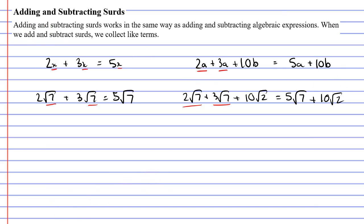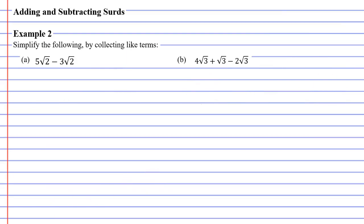Now it's time to get into the example. Starting with question a, you'll notice that we have like terms — both terms have a root 2. So we simply subtract the coefficients: 5 minus 3 is 2, and the surd remains the same, so the answer is 2 root 2.